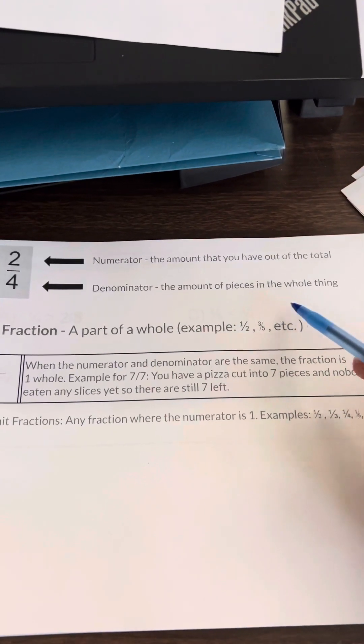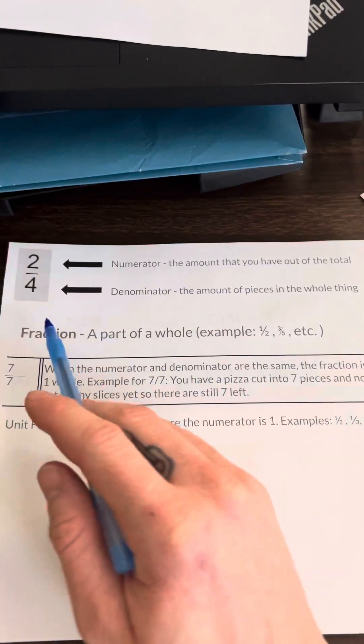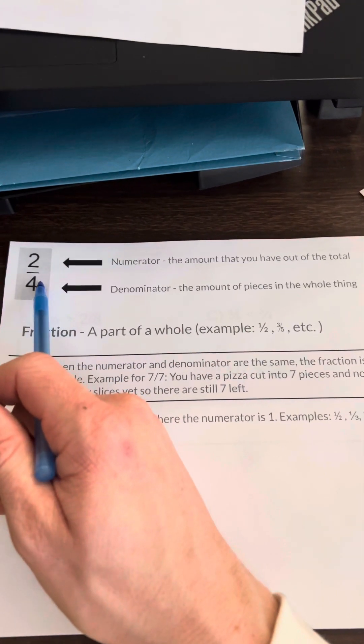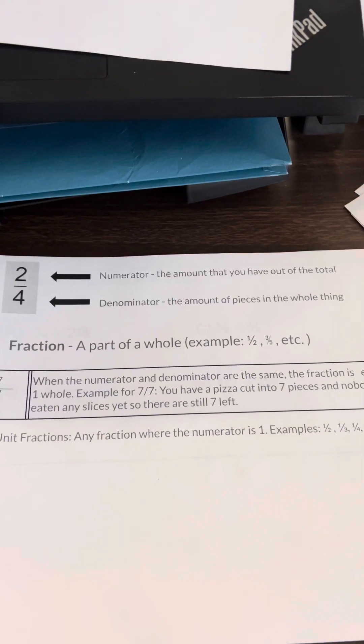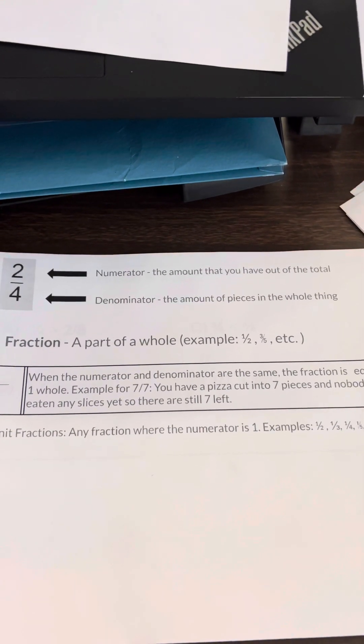So if you have a chocolate bar with two out of four pieces, it means you have four pieces in total. The numerator is the amount that you have out of the total.